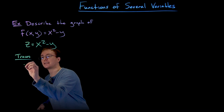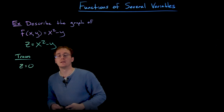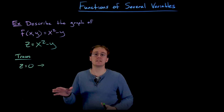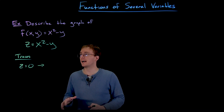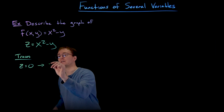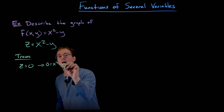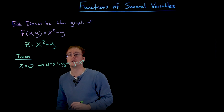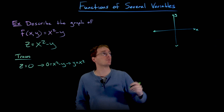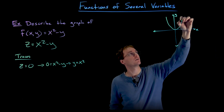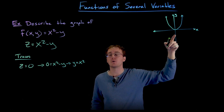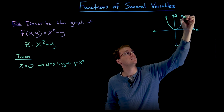A good trace to start with is a horizontal trace like z equals zero, which gives us the xy plane. By looking at the z equals zero trace, we're figuring out where our three-dimensional surface intersects the xy plane. Setting z equal to zero, we get 0 equals x squared minus y, which rearranges to y equals x squared. We should recognize that as a concave-up parabola with a vertex at the origin. This is our level curve corresponding to z equals zero.